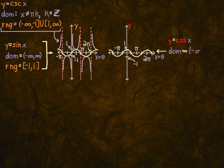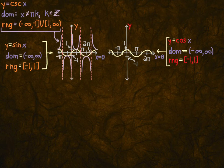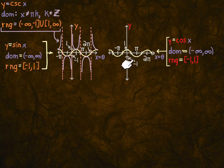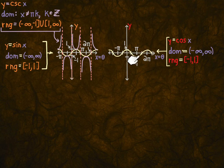So cosine x: the domain is all real numbers and the range is negative 1 to 1 including the endpoints — basically the same as sine for domain and range. Now if you're going to graph secant, the reciprocal of cosine, you need to know where cosine is zero. Cosine is zero at π/2, 3π/2, 5π/2, and so on — at π/2 plus any integer multiple of π.